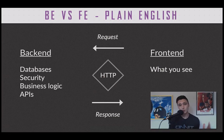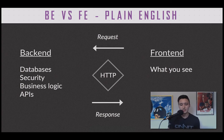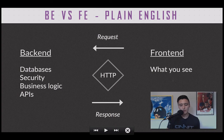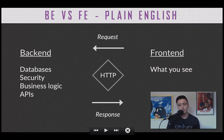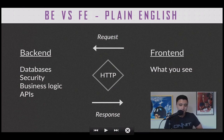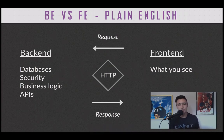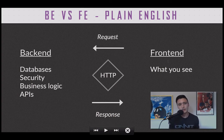In plain English, what is the division of responsibilities? The front-end is literally what you're seeing in your browser or on your phone — the HTML, CSS, and JavaScript. Back-end developers handle requests. If you go to Twitter, type a tweet, and hit enter, that request is sent to the back-end, which might store that tweet in a database, perform security checks to verify it's really you, enforce business logic like the character limit, and then respond so the user can see the tweet they just created.